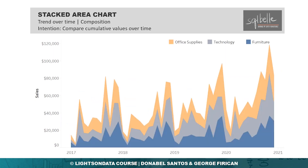If we want to show cumulative totals over time, but also provide an indication of how individual components contribute to this cumulative total, we can consider a stacked area chart. The stacked area chart shares the same benefits and drawbacks of a stacked bar graph. This chart is best to show cumulative values over time, but it's not great at allowing individual parts to be compared.